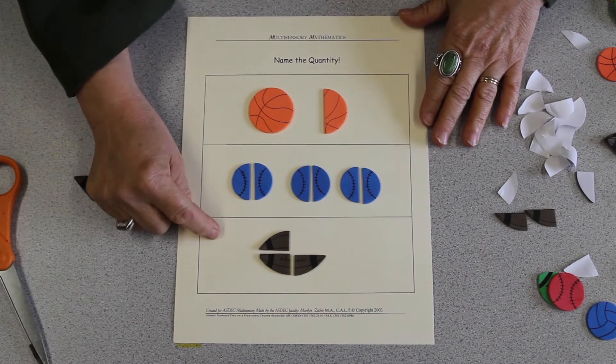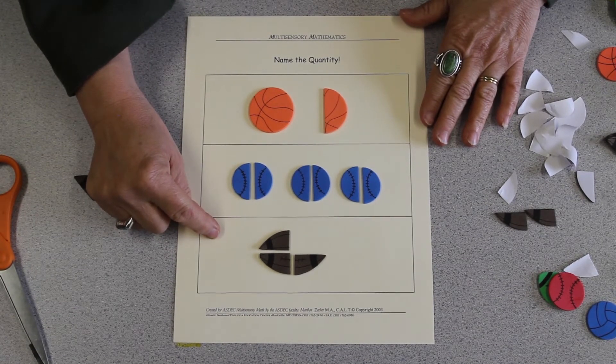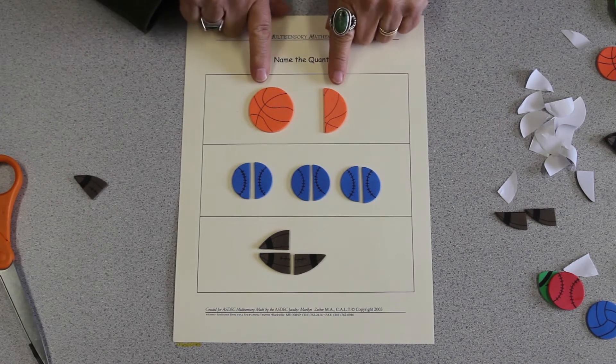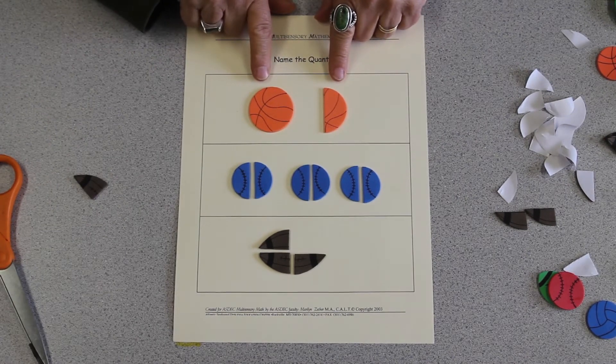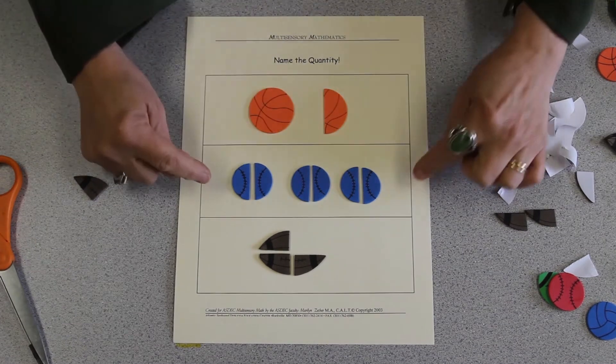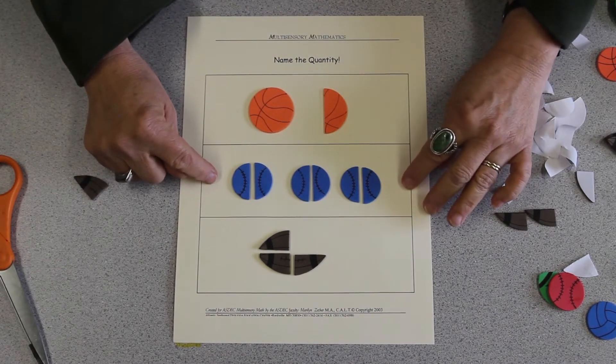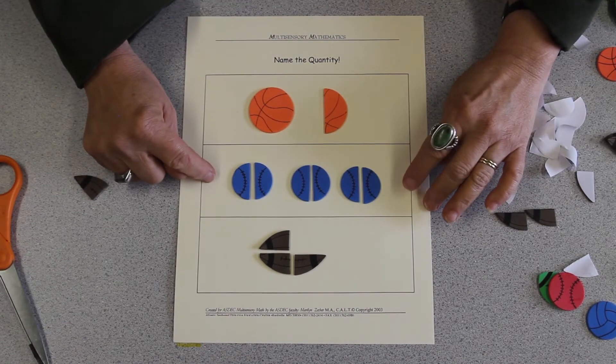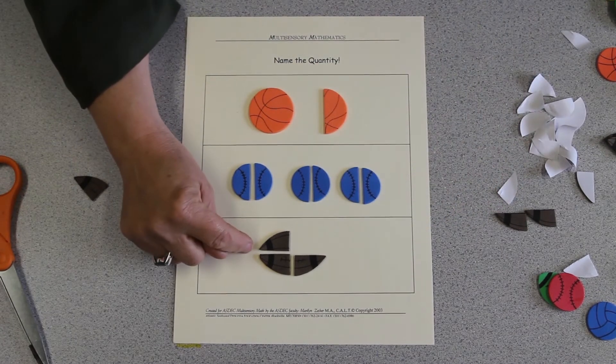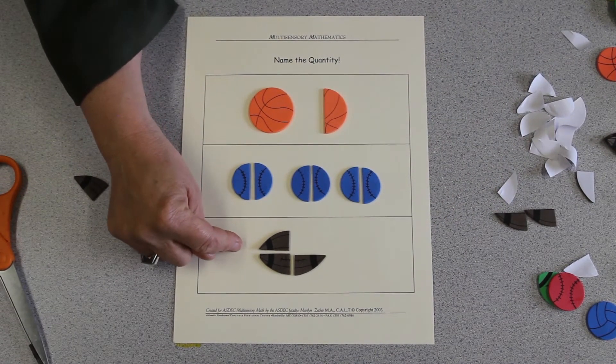Some of them can be simplified, some of them can't. In this case, it's already named in the fewest pieces possible, the mixed number, one and one-half. As written, we have six halves, simplified to three wholes. And in this case, three-fourths, which cannot be simplified.